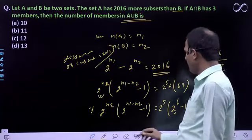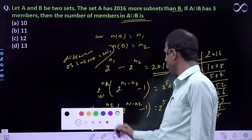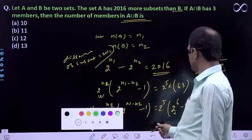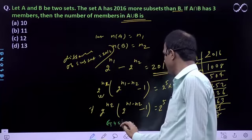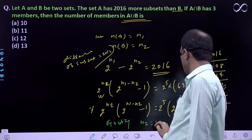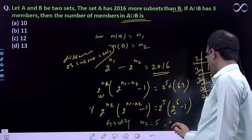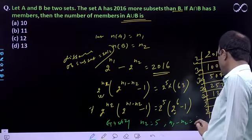Then equating, we get n2 equals 5, and n1 minus n2 equals 6.